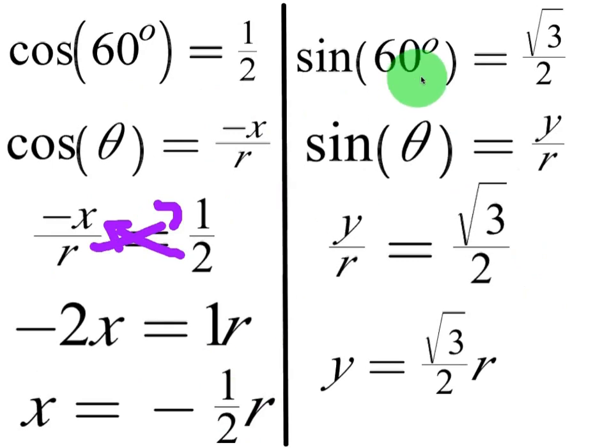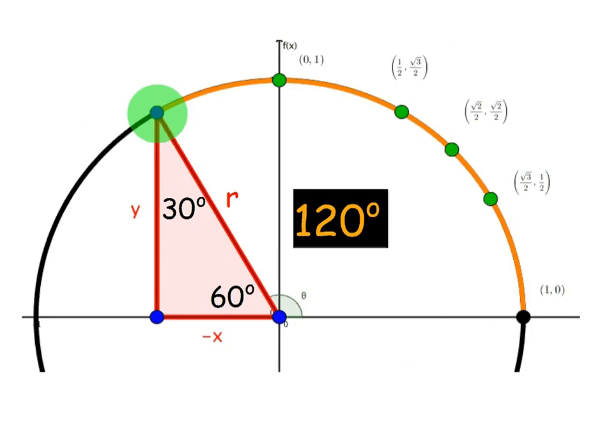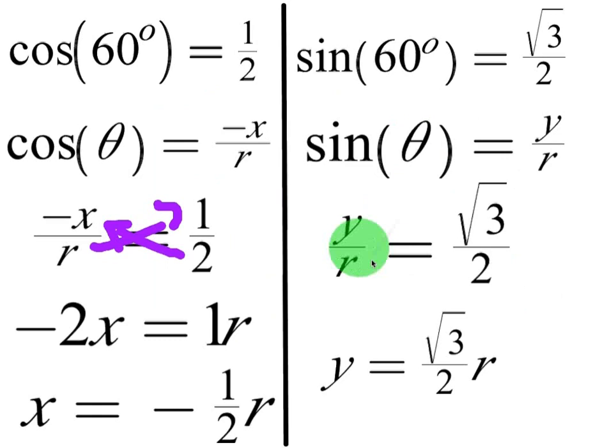Next, we have sine of 60 equals square root of 3 over 2. We already know that from our lesson on trig values. Now, we know that sine of theta is going to be equal to y over r. So we're going to use 60 degrees as our theta. Opposite over hypotenuse would be y over r. We can just multiply both sides by r, and we get y equals square root of 3 over 2r.